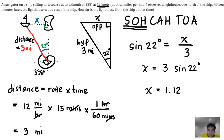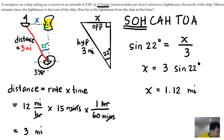Therefore x is approximately 1.12 miles. At that time, the distance between the ship and the lighthouse is 1.12 miles.